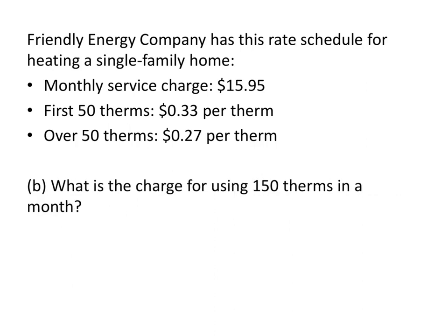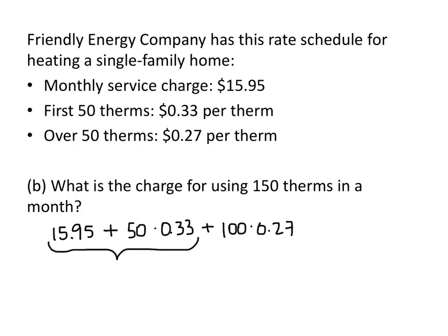What would be the monthly charge for using 150 therms in a month? Now we're in the category of over 50 therms, but we still pay 33 cents for the first 50 therms. So we've got three numbers here: we still pay the basic monthly charge of $15.95; for the first 50 therms, we pay 50 times $0.33; and then for the remaining 100 therms, each costs $0.27. We already know that first portion equals $32.45. Then 100 times $0.27 is $27. Adding those together, we get $59.45.